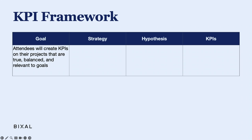Let's say you're working on a Medicare site. Your goals might include something very concrete, like users enrolling in Medicare, as well as something less measurable, like users learning about the enrollment process. At this stage you want to think broadly and not worry about what's measurable — we don't want to limit ourselves and end up with KPIs that don't tell the full story.